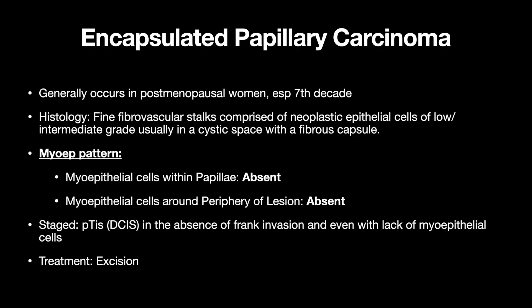Encapsulated papillary carcinoma generally occurs in postmenopausal women, especially in the 7th decade. Histologically, you'll see fine fibrovascular stalks comprised of neoplastic epithelial cells of low to intermediate grade, usually in a cystic space with a fibrous capsule. The myoepithelial cells within the papillae will be absent, and the myoepithelial cells around the periphery of the lesion are also absent. It's staged as pTis like DCIS in the absence of frank invasion — even with the lack of myoepithelial cells around the periphery. Frank invasion is when neoplastic cells invade past the fibrous capsule. Treatment is excision.